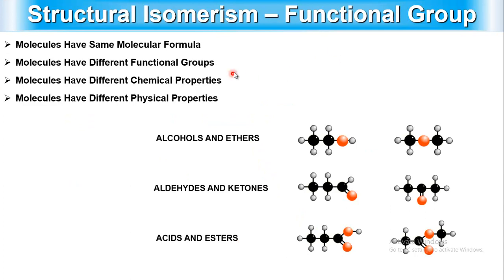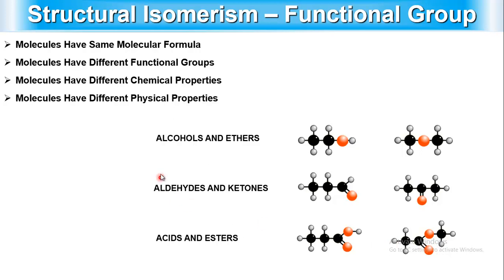The third type of structural isomer is the functional group isomer. These compounds have the same molecular formula but different functional groups, so they have different chemical and physical properties. Examples include alcohol and ether, aldehyde and ketone, and carboxylic acid and ester.